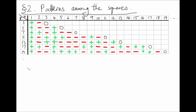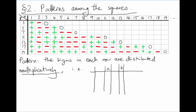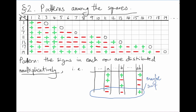Here's a pattern that will be really important for us: each row has the same number of plus signs as minus signs. A more complex fact is that if we fix a single prime number p, the plus and minus signs in that row are distributed multiplicatively. If you know the signs of two entries in a row, say a and b, then you know the sign of their product ab. A square times a square is a square. A square times a non-square is a non-square. And the product of two non-square numbers mod p will always be a square number mod p.